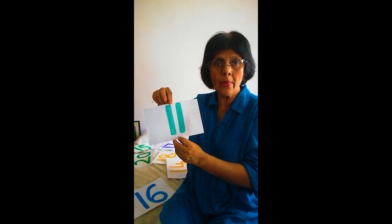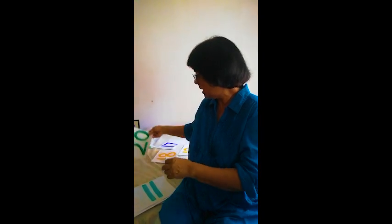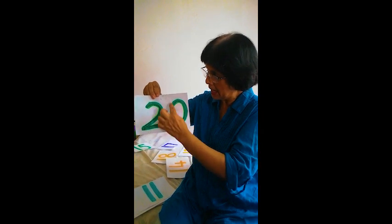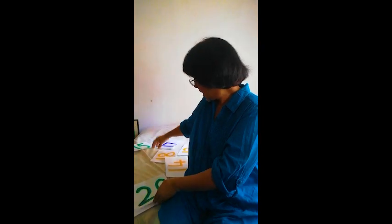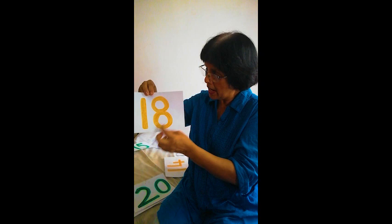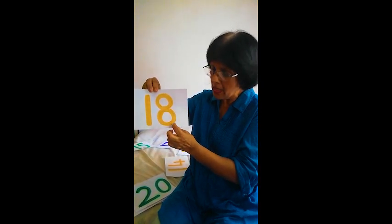Eleven — number eleven: one and one. Now here another number: two and zero. Two and zero — we call this number twenty. Twenty, twenty — two, zero, twenty. Here another number: one and eight — we call this number eighteen.